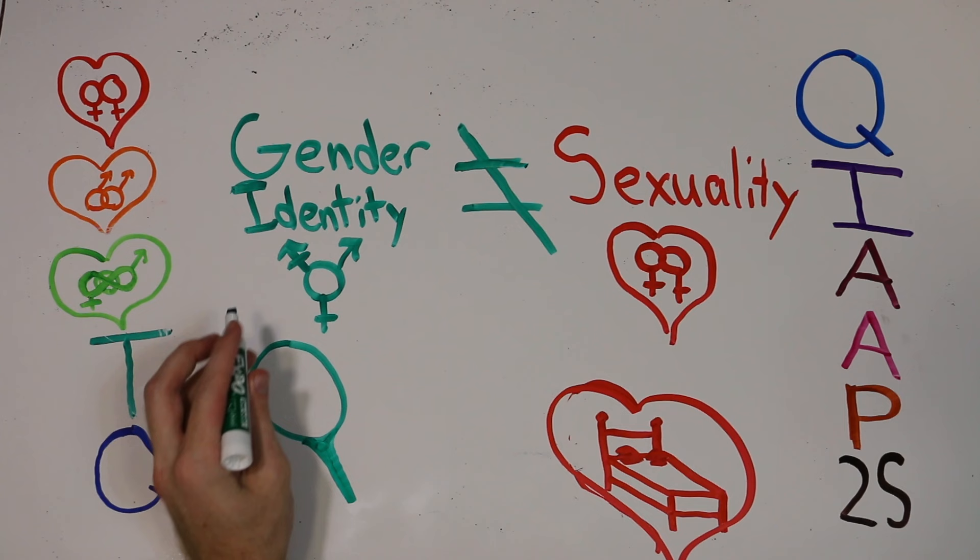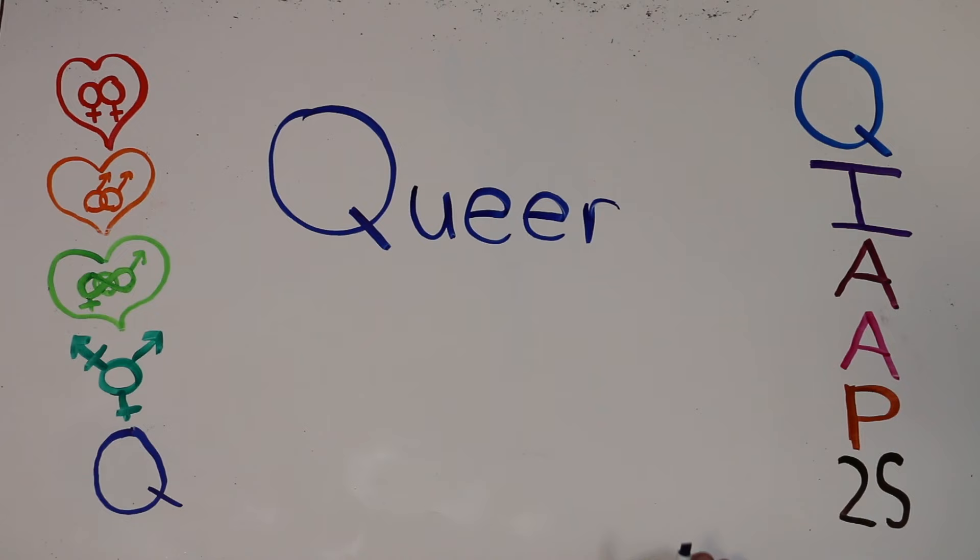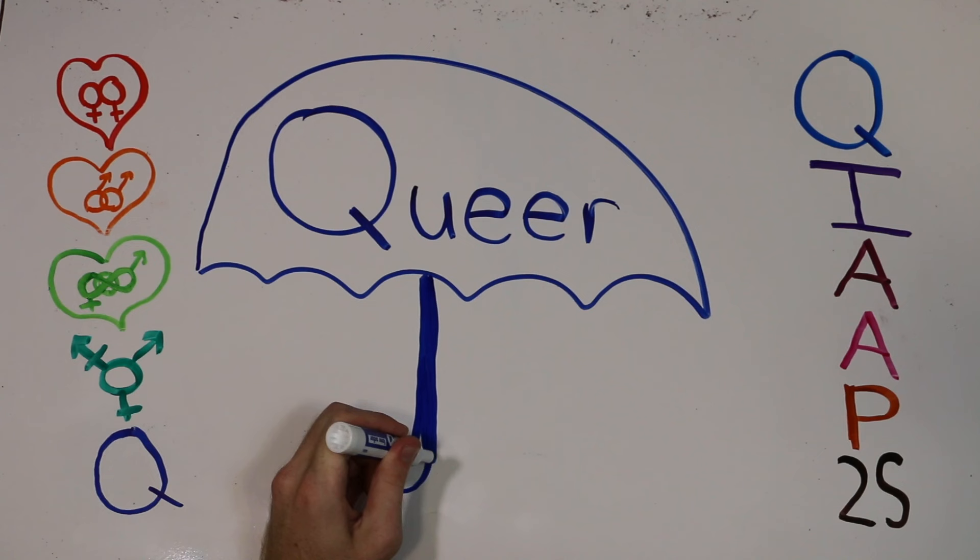That brings us to the first confusing letter, Q. This one letter actually stands for all of the letters together — queer. It's another umbrella term, and it applies to all LGBT plus people as a whole, and is a lot shorter and easier to say than LGBTQQIAAP2S.